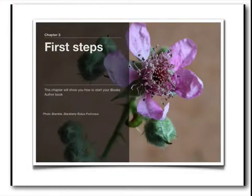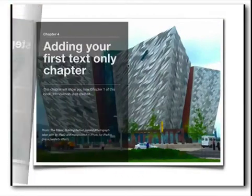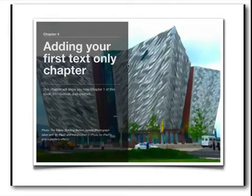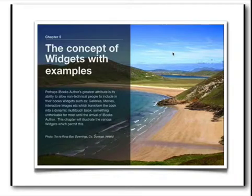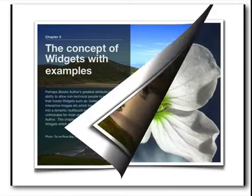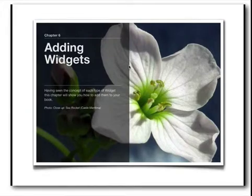Chapter three is called 'First Steps.' This will enable you to do a small amount of your book in a very simple way, but you will be successful. This is how you add a text-only chapter, and it goes through the steps followed in developing chapter one. One of the great strengths of the iBooks Author system are widgets, and this chapter will deal with the concept of widgets and give you examples of how they can be used. A following chapter is really about adding widgets — previous chapters didn't tell you how to add them, just described them, and this chapter will tell you how to add your widgets.